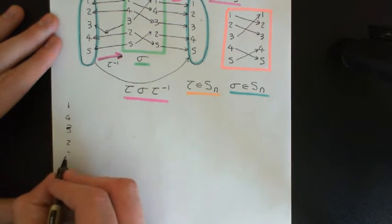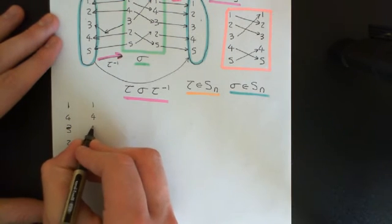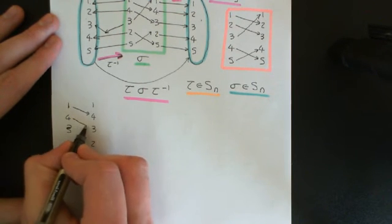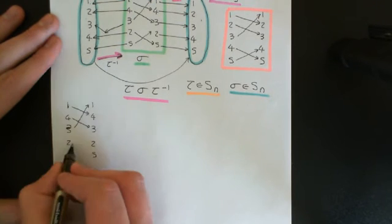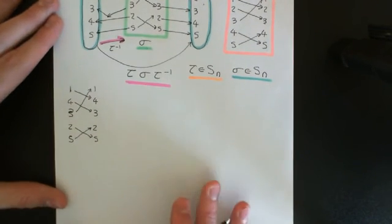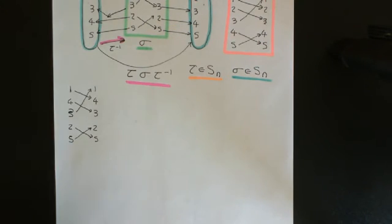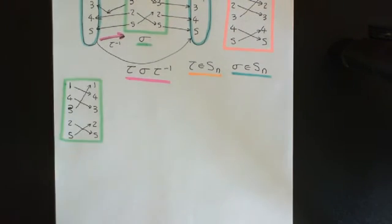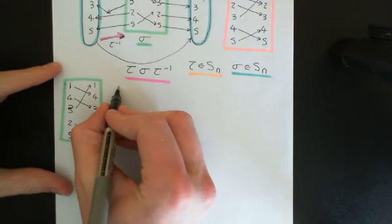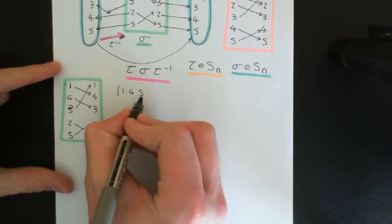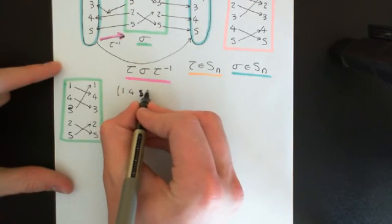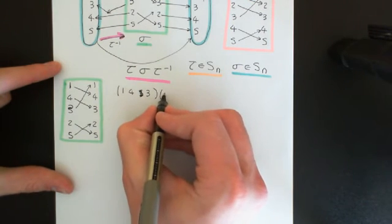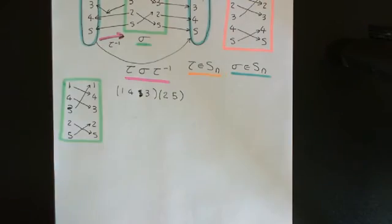So imagine that's a 3. We have 1 going to 4, 4 going to 3, 3 going to 1, and 2 going to 5, and 5 going to 2. This is our old favourite set permutation on the set of 5 elements, and I'll box it in green. The cycle decomposition of this is: (1 4 3) — that is, 1 goes to 4, 4 goes to 3, and 3 goes to 1 — and then the other cycle is (2 5), since 2 goes to 5 and 5 goes to 2.